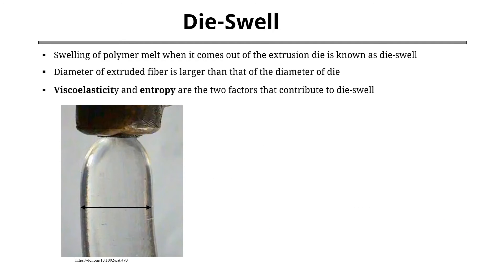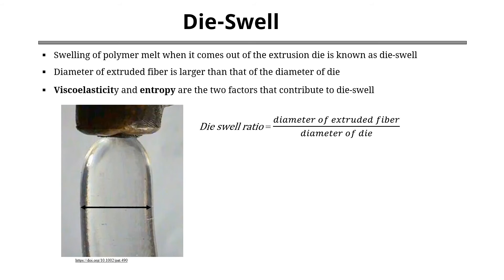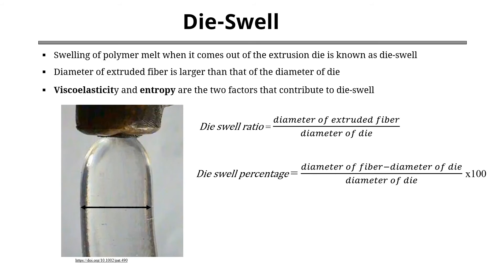We can measure die swell ratio by dividing the extruded fiber diameter by the diameter of the die, or we can calculate die swell as a percentage. If we know the die swell percentage of a polymer, we can calculate the diameter of the die to get a fiber of fixed diameter.